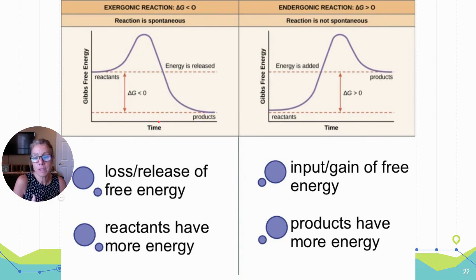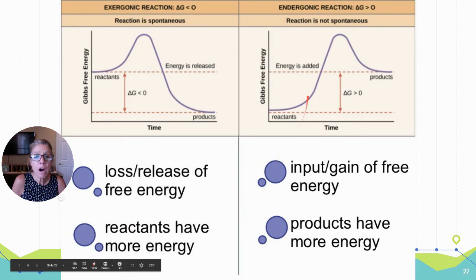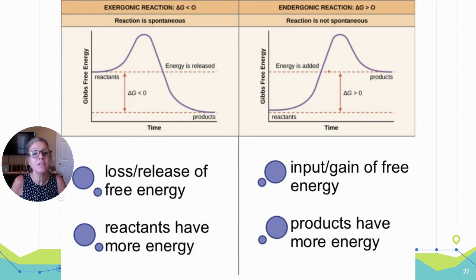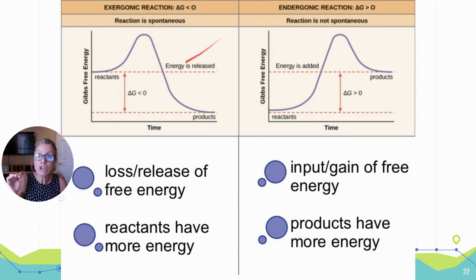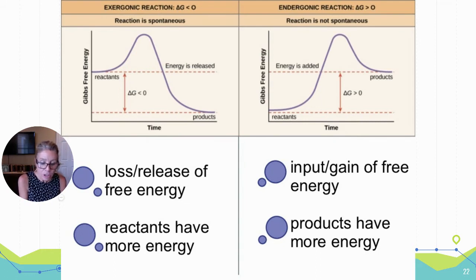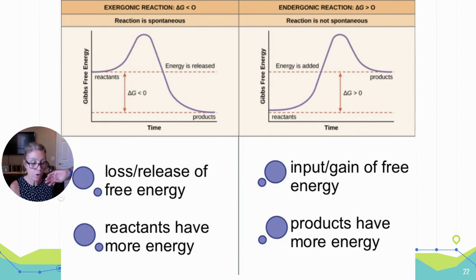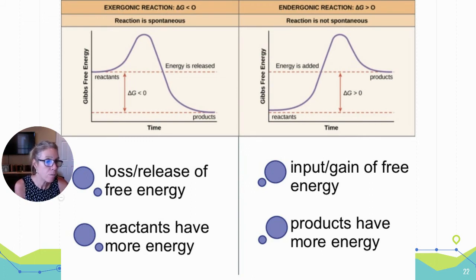In an endergonic reaction, Delta G is greater than zero. Here are your reactants and products — you have to put energy into the system to make that product; the products have more free energy. On your notes: negative Delta G is an exergonic reaction — a loss or release of usable energy, reactants have more energy. Positive Delta G is an endergonic reaction — an input or gain of energy is required, and the products have more free energy.